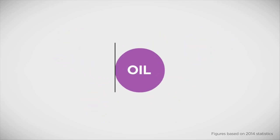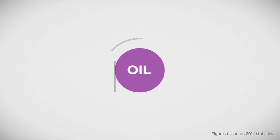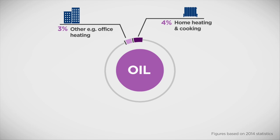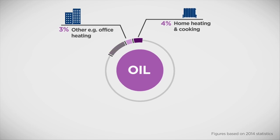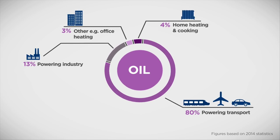Oil provides around a third of all our energy. 4% of this oil allows us to cook and heat our homes. 3% is used in other ways, like heating offices. 13% is used by industry. And a huge 80% powers our transport.